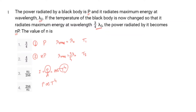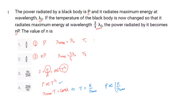From Wien's Law, lambda-max times T equals a constant. So we can write T equals k divided by lambda-max, where k is the Wien's constant. Therefore, power is proportional to (k / lambda-max) to the 4th.